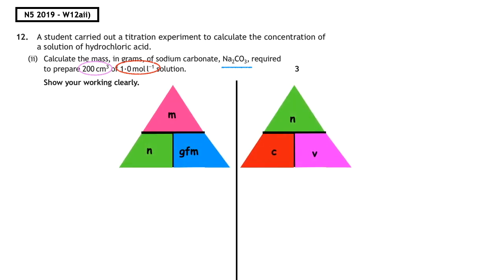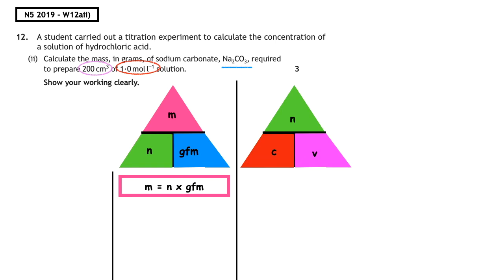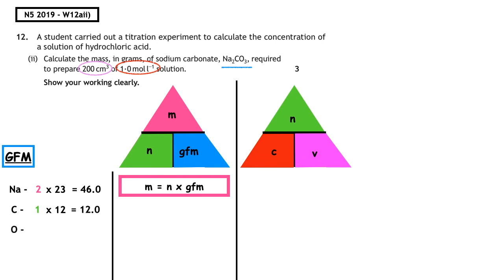The first thing we have to do is write down both triangles — remember 'my nice granny never cuts violets'. The question wants us to work out the mass, so we write mass = number of moles × gram formula mass. We haven't been given the number of moles, but we have been given a formula to calculate the gram formula mass for Na₂CO₃. Sodium: two multiplied by the relative atomic mass of 23 — two times 23 equals 46. Carbon: one multiplied by the relative atomic mass of 12 — one times 12 equals 12.